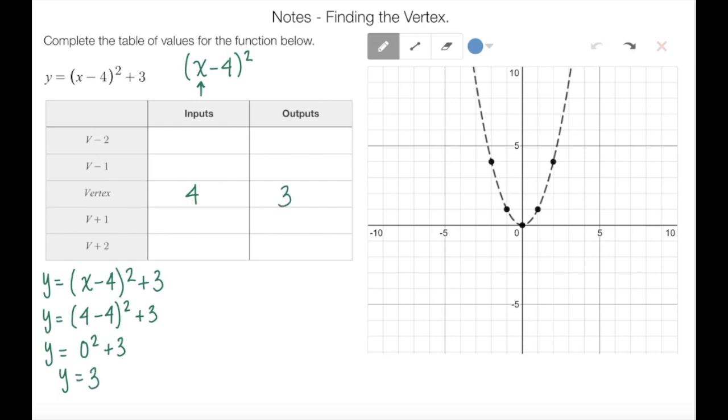So now I found an input of 4 and output of 3. That is the new value of my vertex in this graph. Here is the value of my new vertex, and as you can see it has been shifted to the right and up.